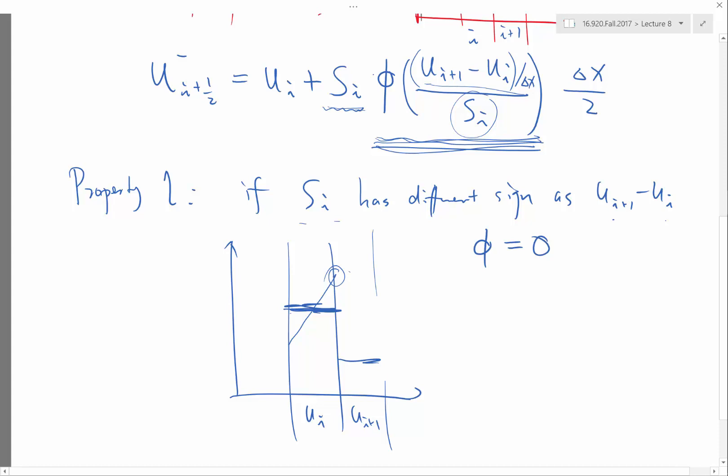The same happens if I want to reconstruct a negative slope and the right value is actually higher. In order to prevent a new local minimum, I also have to have phi equal to zero. So basically,